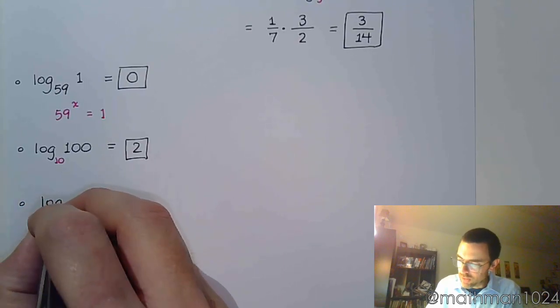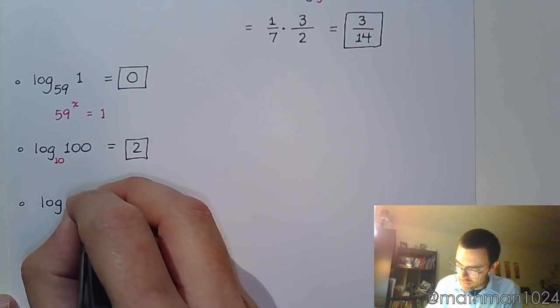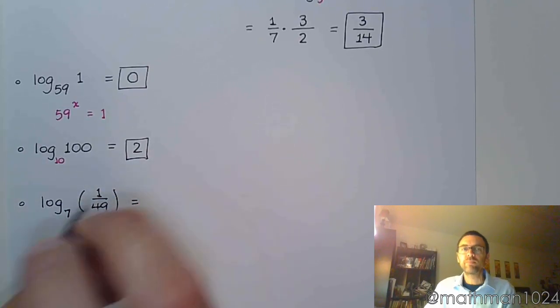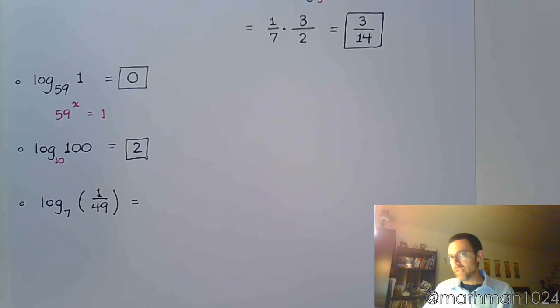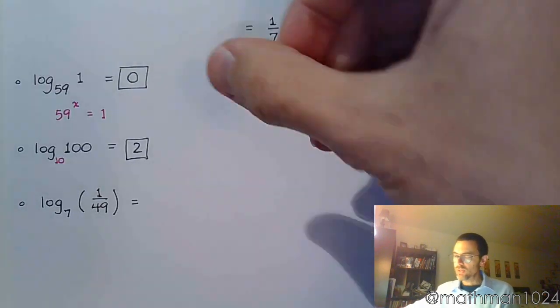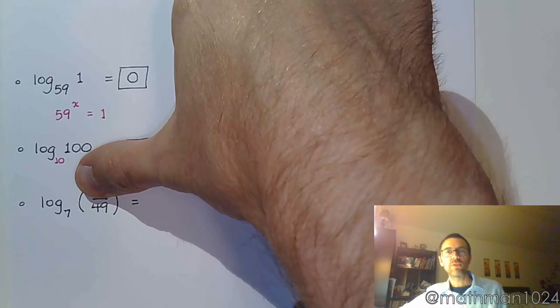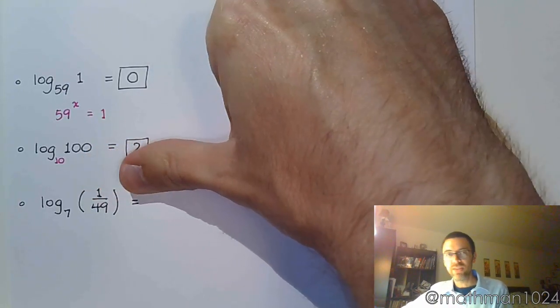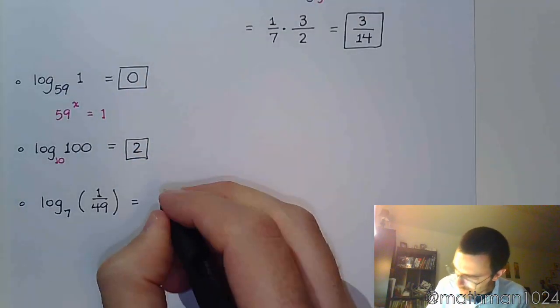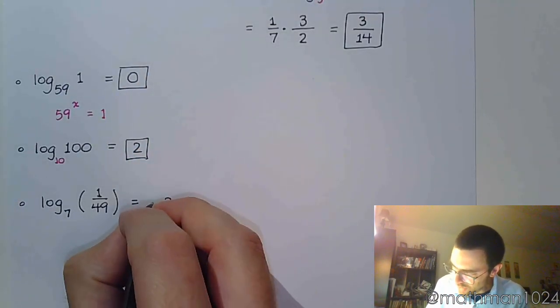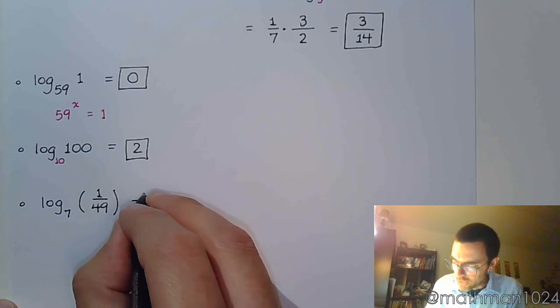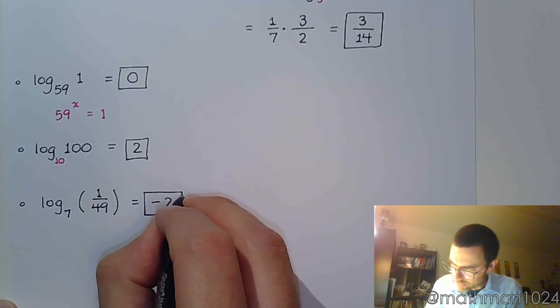If I have log base 7 of 1 over 49. If I didn't have the fraction and we just saw this, you would say that the power of 7 that gives us 49 is 2. But, since it's in the denominator, it's not 2, but it's negative 2. Because, remember, the answer is the power. And, what kind of powers cause you to end up in the denominator? Negative powers. Okay?